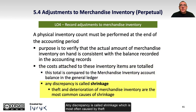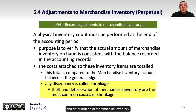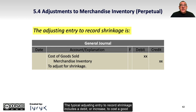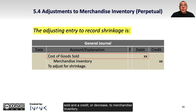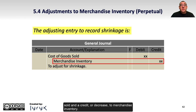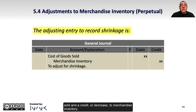Any discrepancy is called shrinkage, which is most often caused by theft and deterioration of merchandise inventory. The typical adjusting entry to record shrinkage includes a debit, or increase, to cost of goods sold, and a credit, or decrease, to merchandise inventory.